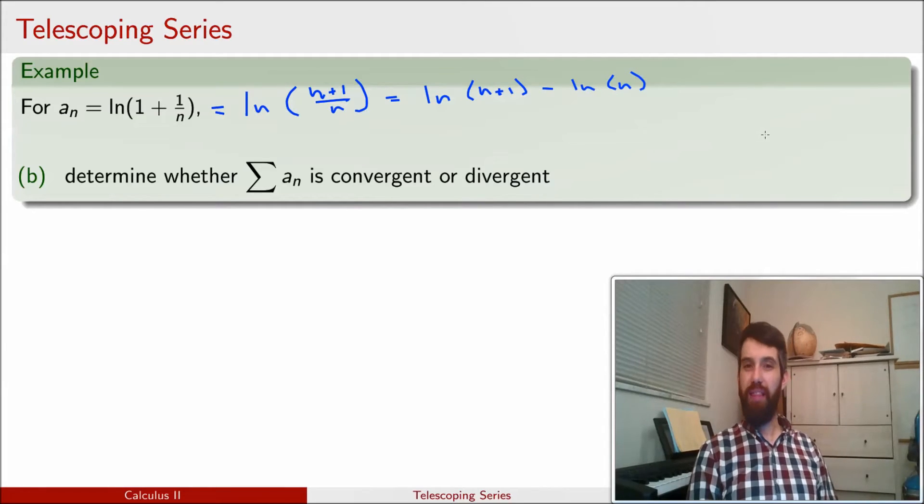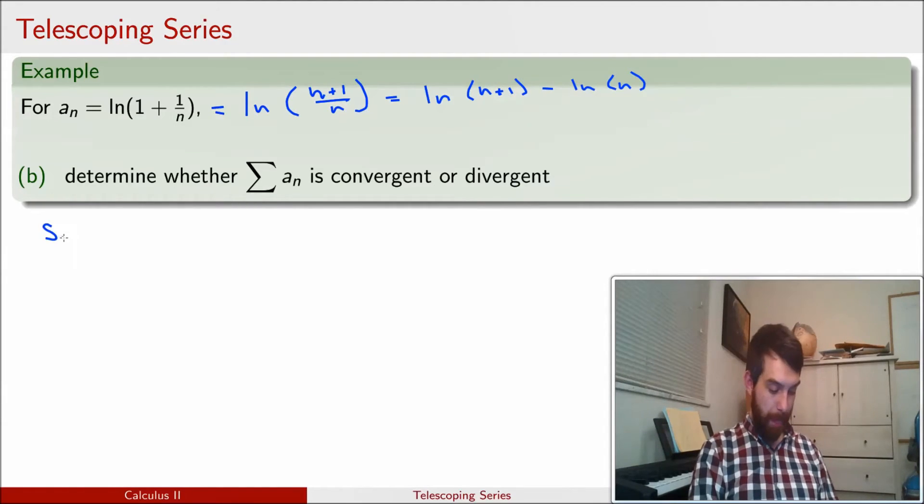And you might not immediately think that this algebra has helped us so much, but it will have, and I'll show you how. Now that I've done the algebra, I'm going to write down a few of my partial sums. So first up, s_1. s_1 is just the sum of the first one term, so it's just a_1, or in this case, it is going to be natural log of 2 minus the natural log of 1. And indeed, the natural log of 1 is going to be 0, but it's fine for now.